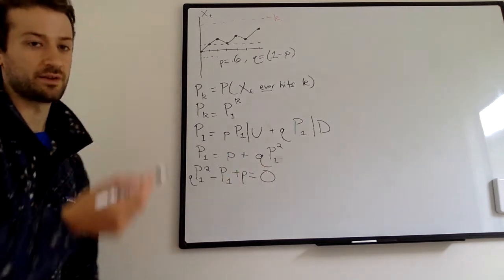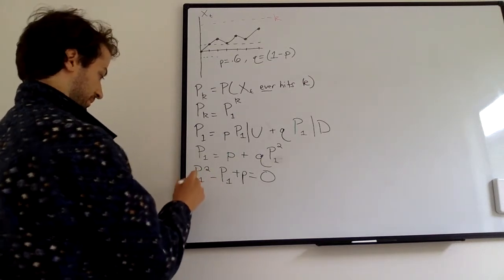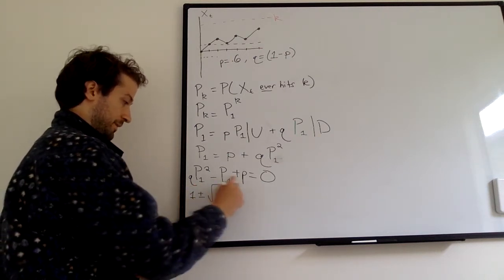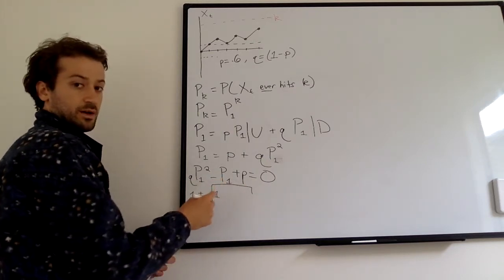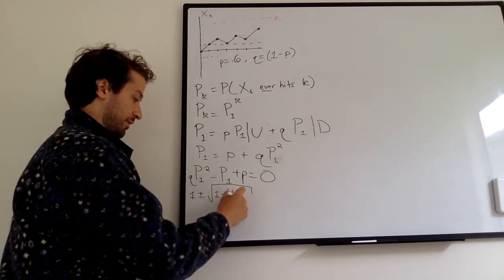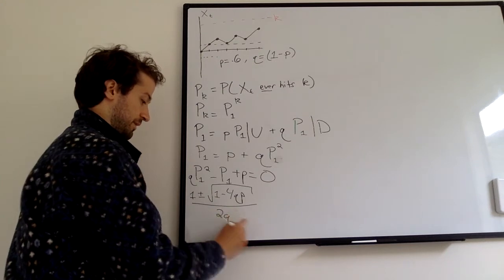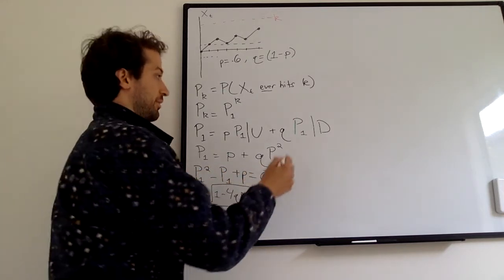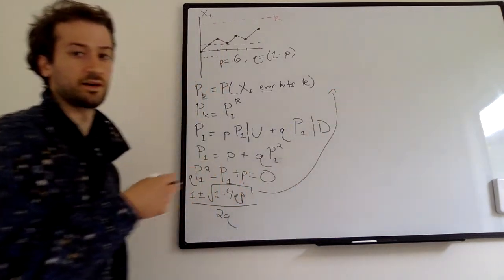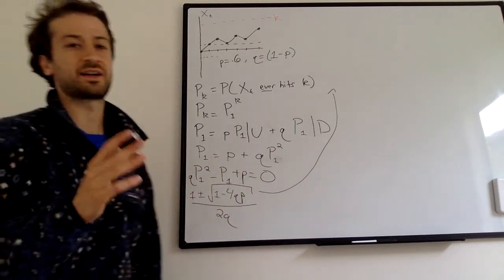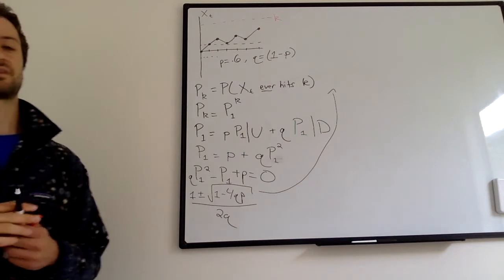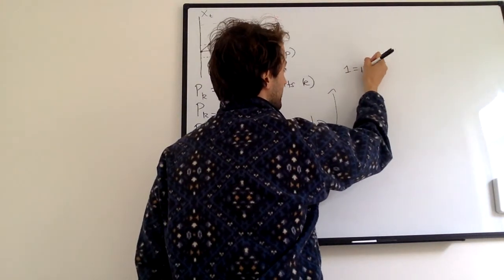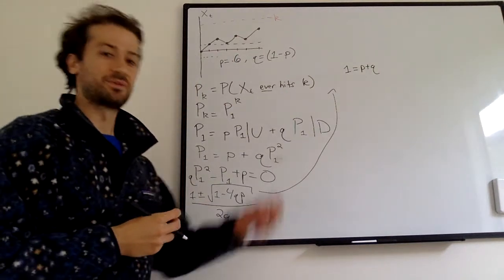We can use the quadratic formula to solve it. With A equals Q, B equals negative 1, and C equals P, we get: 1 plus or minus the square root of 1 minus 4QP, all over 2Q. This looks a little weird to solve because of the square root of 1 minus 4QP, but we have a trick. We know that 1 equals P plus Q, since P is the probability of going up and Q is the probability of going down, so P plus Q equals 1.